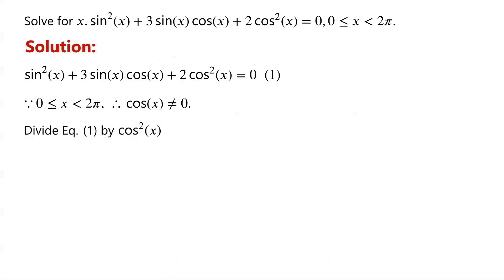Divide equation 1 by cosine squared of x. We have: tan squared of x, plus 3 tan of x, plus 2 equals 0.